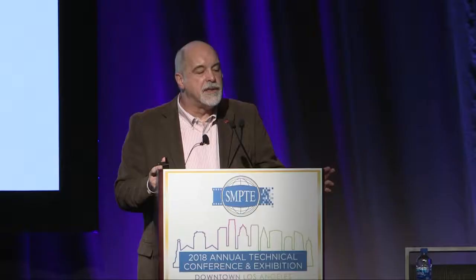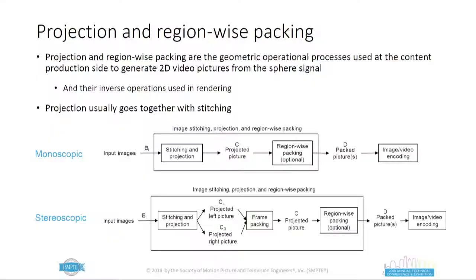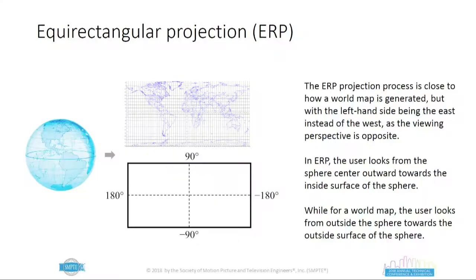The coordinate system in MPEG-I is a three-dimensional coordinate system. Key to it is that the user is located at the center and looks outward into the world — the world is projected out from the user in a virtual sphere. There are two different ways of capturing content: monoscopically, which is the simplest, and stereoscopically, which is more complex, requiring at least two images. In both cases, imagery comes in and then stitching and projection are done on it.